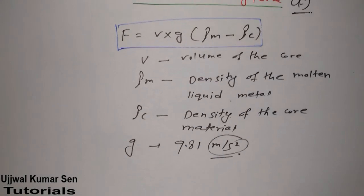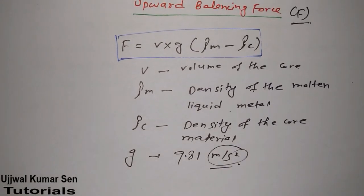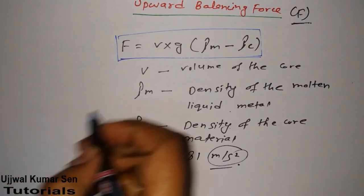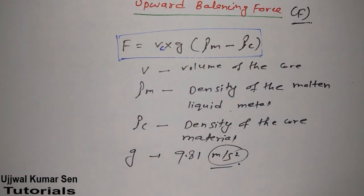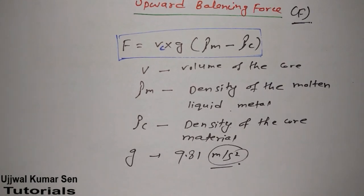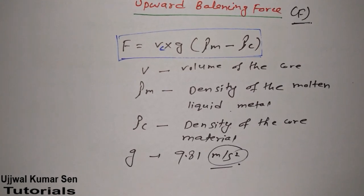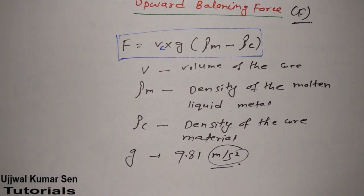To summarize: the formula for upward balancing force is F equals V times g times (ρm minus ρc), where V is the volume of the core — not velocity — g is acceleration due to gravity, ρm is the density of the molten liquid metal, and ρc is the density of the core material. Thanks for watching, see you soon in the next video.